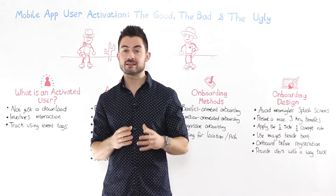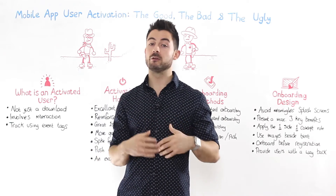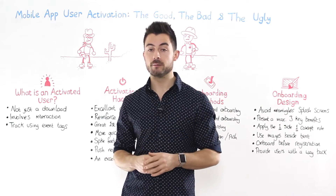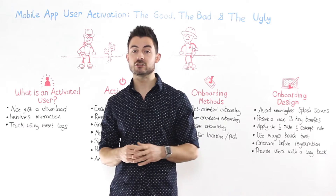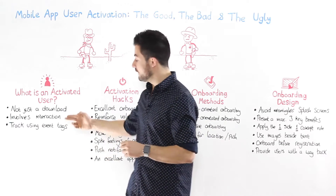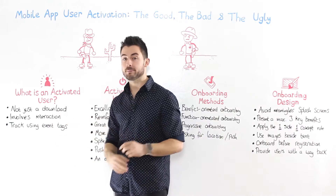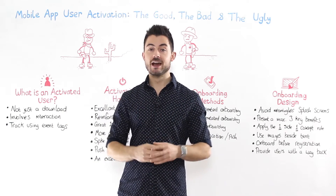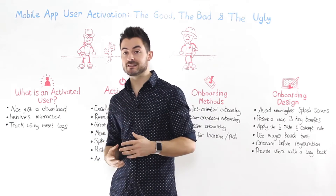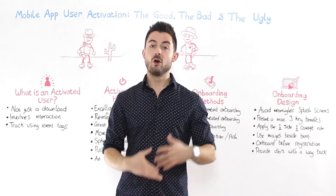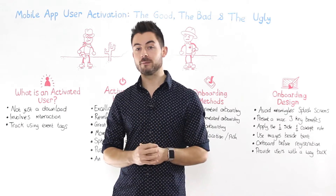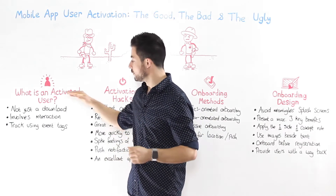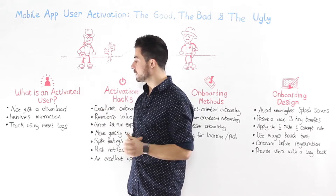You're going to need to decide what you term as activation in your own company. I would suggest, if you haven't done so already, go back and watch the second episode of Mobile Metrics where we teach you how to do event tagging within your mobile app, tracking various interactions. Once you've done this, it can be quite easy to decide what you're going to term as activation.